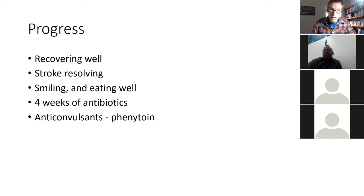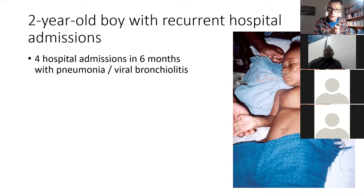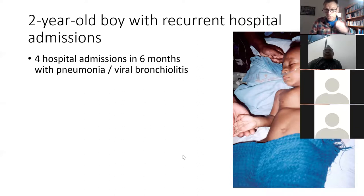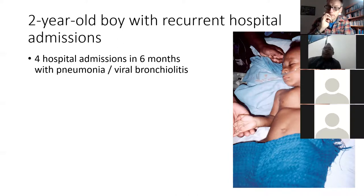The second case: a two-year-old boy with recurrent hospital admissions — four admissions in the previous six months with pneumonia or viral bronchiolitis. We need an approach to such children. Looking at the picture, this child has a chest deformity — a pectus excavatum, where the chest is sucking inward. This is different from the barrel-shaped chest or pectus carinatum protrusion seen with congenital heart disease.